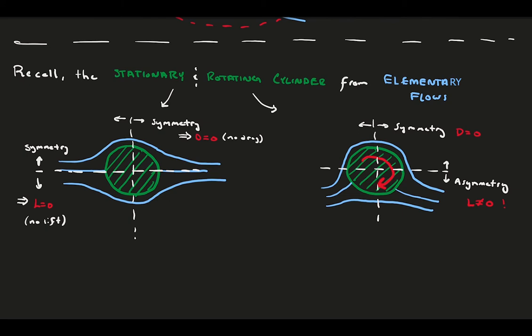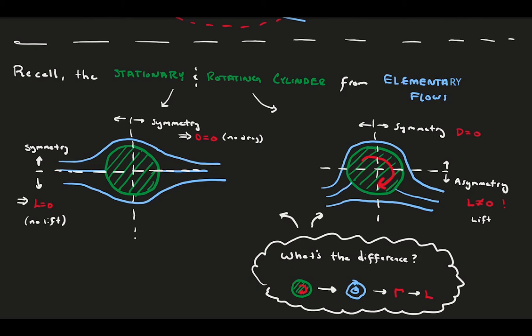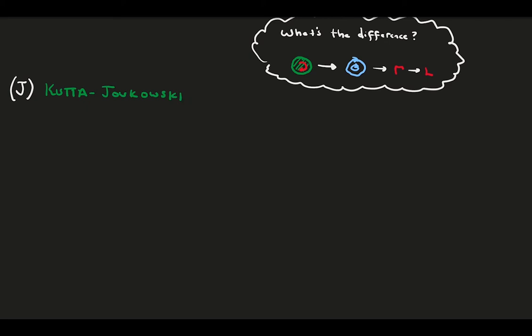So what's the main difference between these two flows that causes the asymmetry? The case of the rotating cylinder is really the case of the stationary cylinder with the addition of the point vortex elemental flow. And that point vortex leads to added circulation, which leads to lift. This is the heart of the Kutta-Joukowsky theorem, an equation that relates the lift per unit span in a flow field to the circulation along with the flow velocity and density.